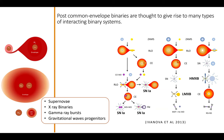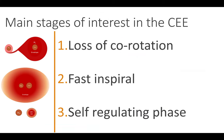The reason we believe these systems went through the common envelope phase is that if we follow single stellar evolution, at least one of the components should have once been much larger than their current observed separation. This means there should have been some migration process that brought them closer together, and secondly, this envelope should have been evaporated. So this is the purpose of the common envelope.